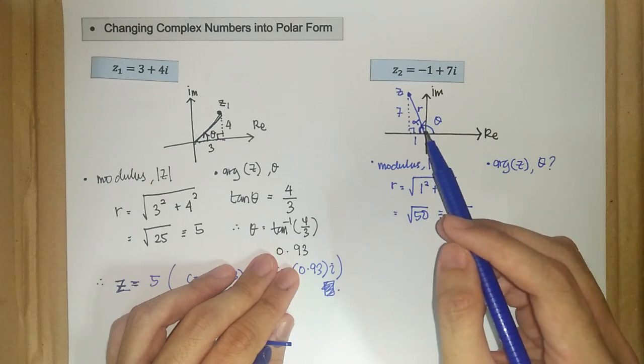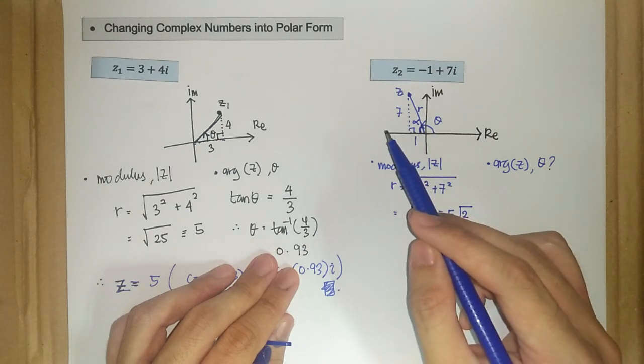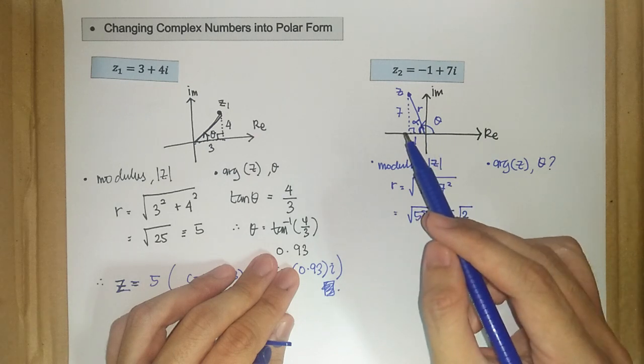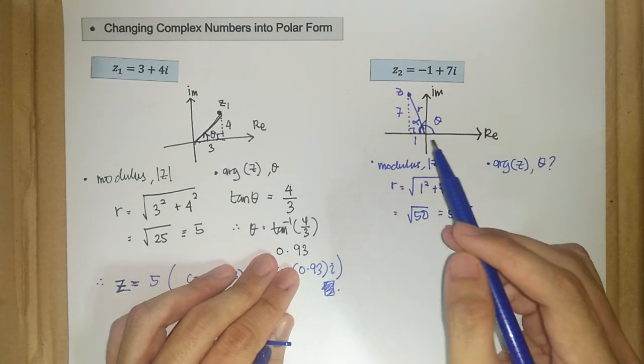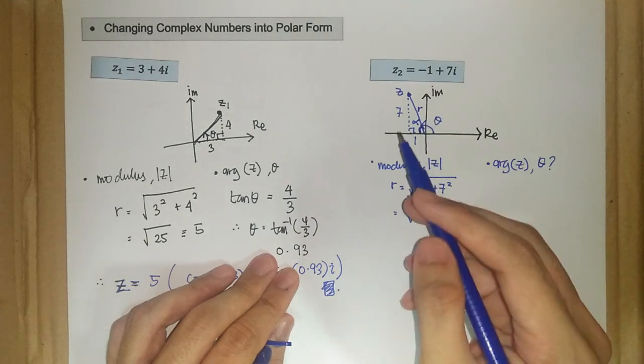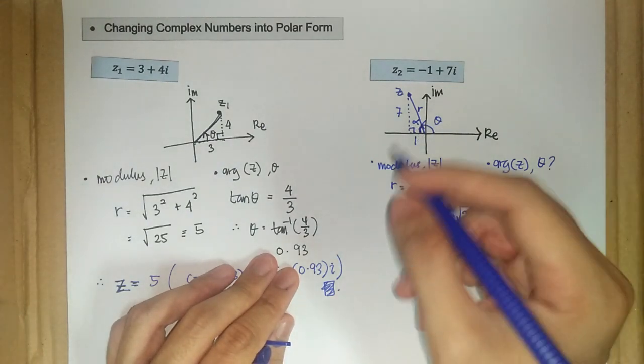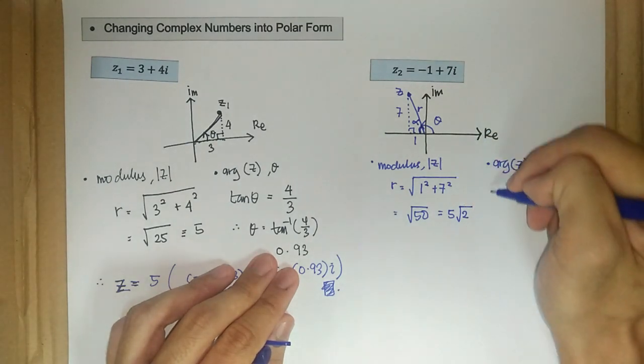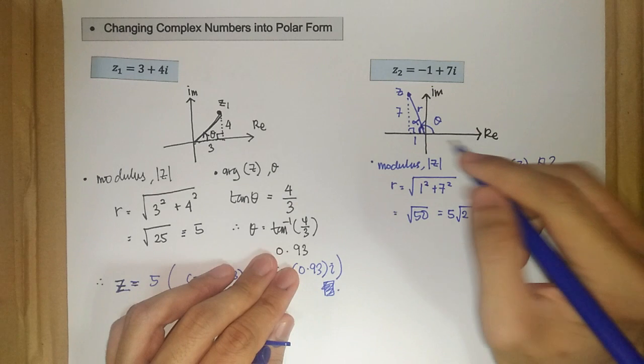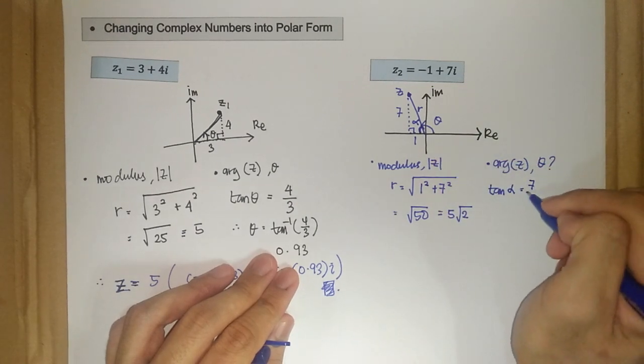we can subtract it from the whole angle here, which takes the value of pi or 180 degrees, then we get the theta or our argument. So let's find the alpha first, then we subtract later. So we have tan alpha is equal to seven over one.